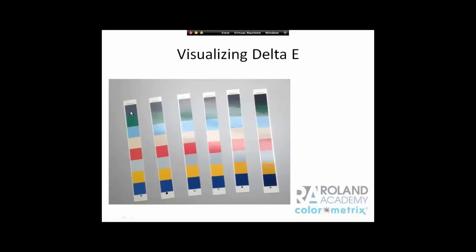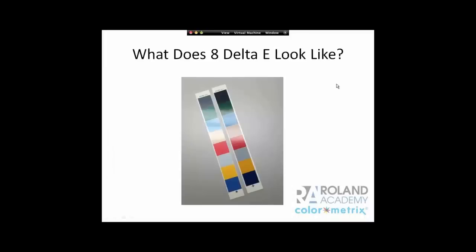From left to right, we arrange these gray patches from light to dark. Looking at a gray patch from one end to the other, that's what they call eight Delta E. Here it is side by side — so what does eight Delta E look like? This is it.